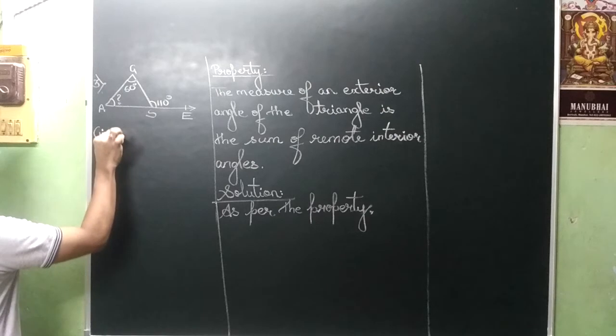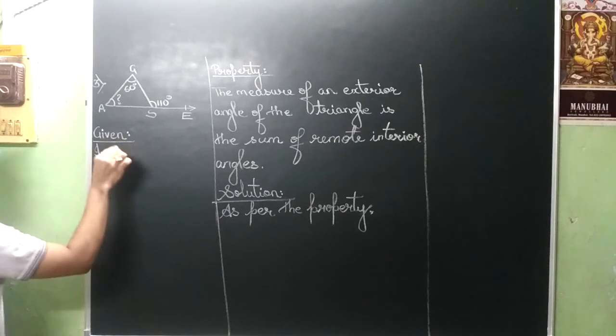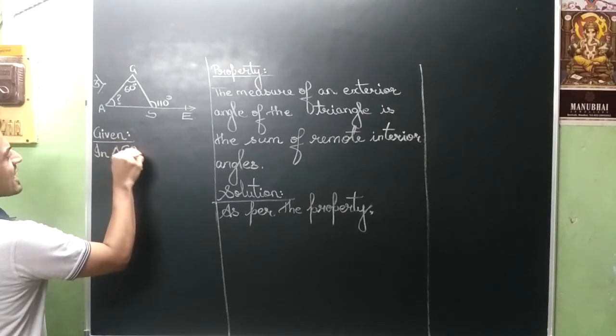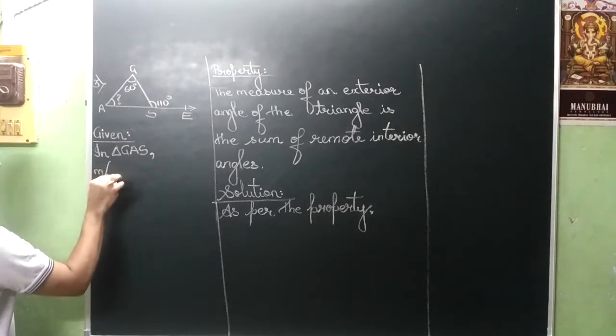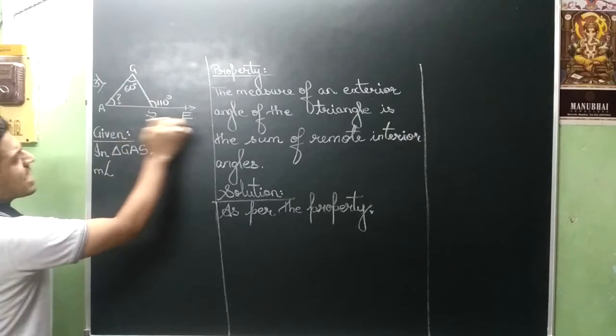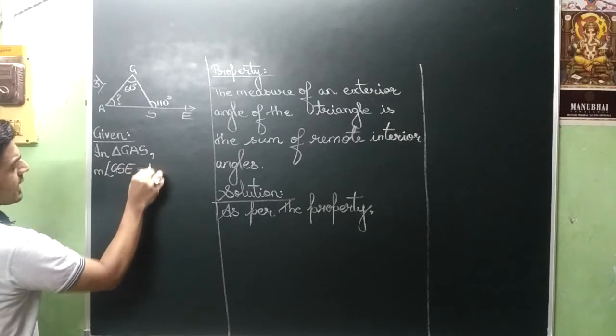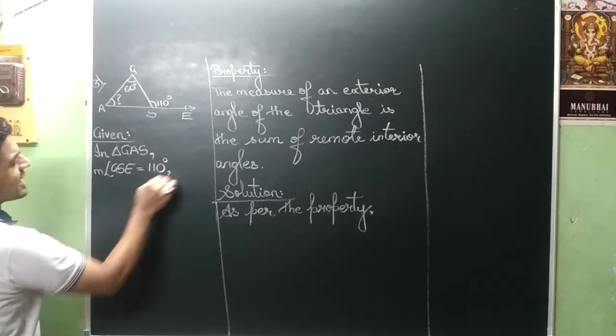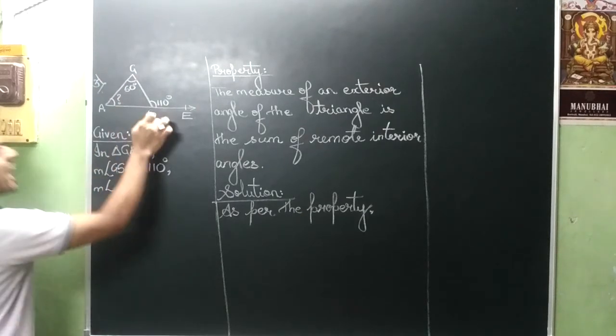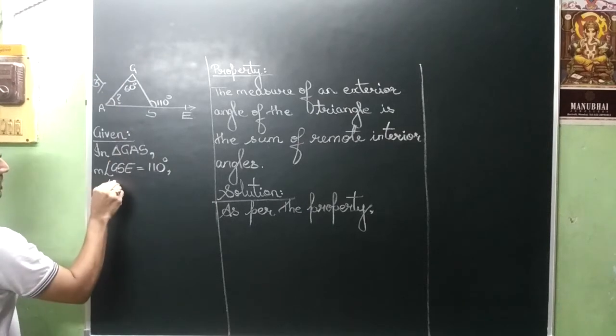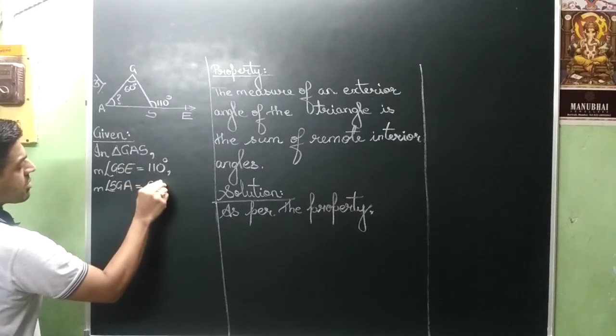Given, what is given to you? In triangle GAS, measure angle GSE. What is the measure? 110 degrees. And then G is given to you, that is angle SGA and the measure is 60 degrees.